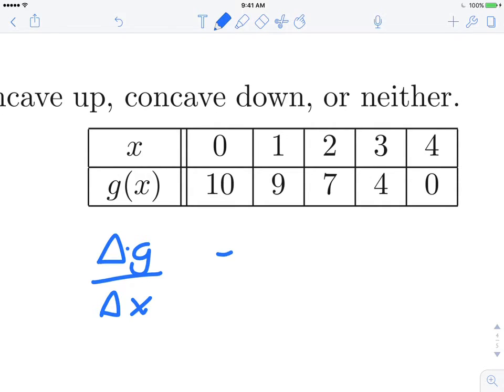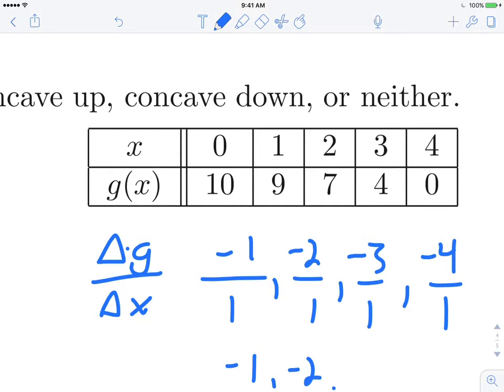So this is going to be negative 1 over 1. The next set is negative 2 over 1. The next set is negative 3 over 1, and the last set is negative 4 over 1. Negative 1 to negative 2 to negative 3 to negative 4.